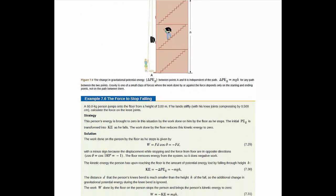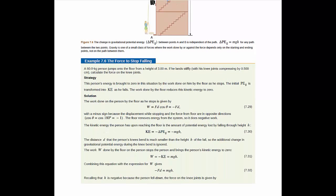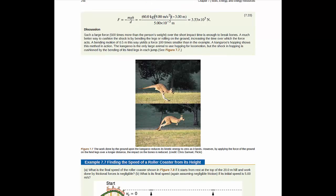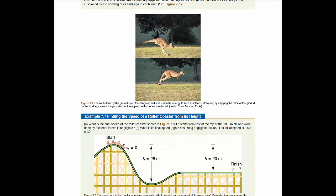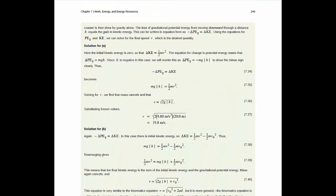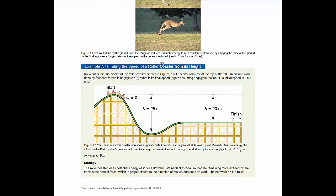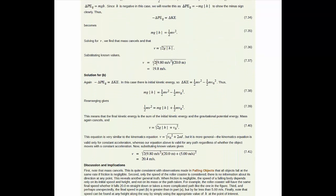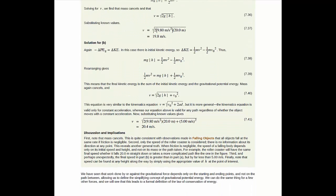So, example 7.6, you have the work done by gravity in terms of a potential energy problem. Lots of good examples in this, converting potential energy to kinetic energy, example 7.7. You'll have quite a few homework problems along this particular type of line. So this example probably is worth paying some attention to.